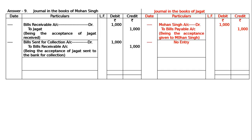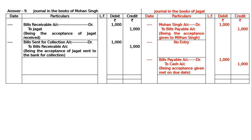On due date, bank gets the payment. Make the entries in the books of all the parties. Jagat paid. In the books of Jagat on the due date, it will be Bills Payable Account debited to Cash Account — being the acceptance made and paid on the due date, Rs.1000.